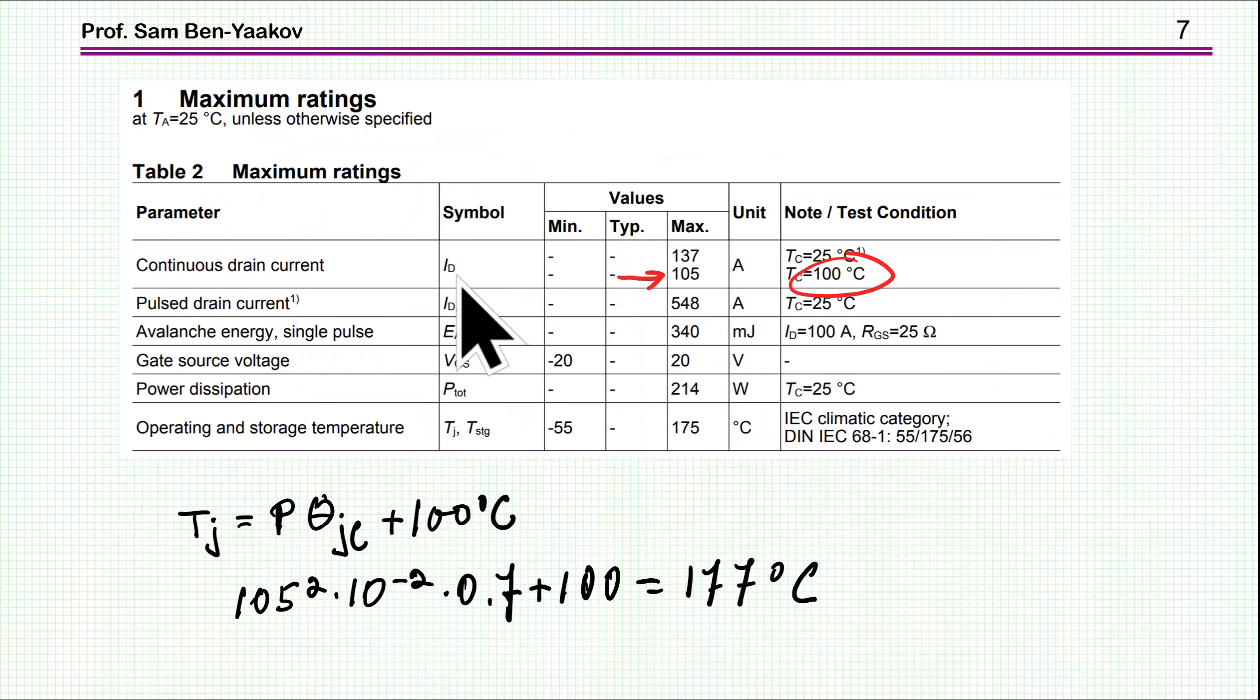I'm now moving to the continuous current for 100 degrees centigrade case temperature, specified to be 105. If I'm doing a calculation of the junction temperature, the power I squared, assuming 10 milliohm RDS-on, 0.7 thermal resistance, I'm coming up to 175 which is the maximum temperature. So these two are apparently limited by the temperature of the junction.